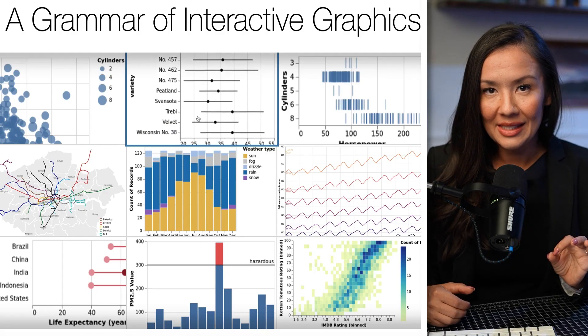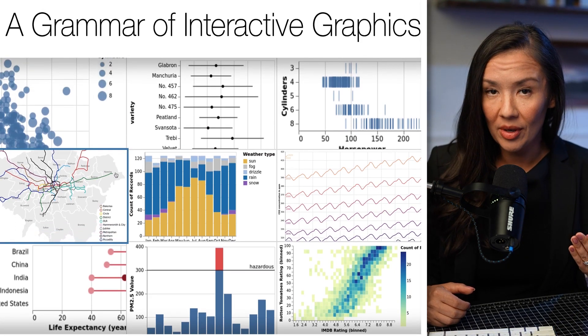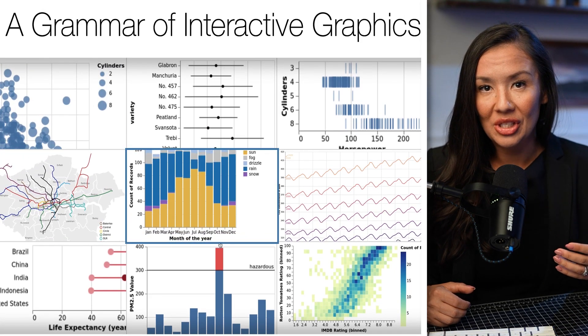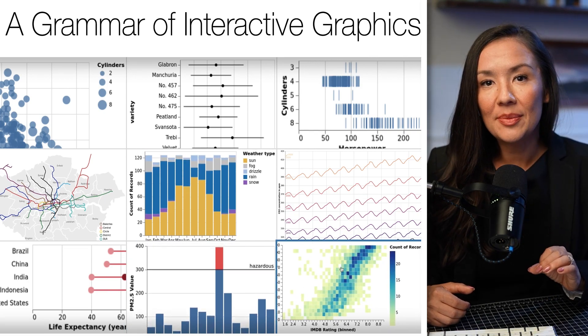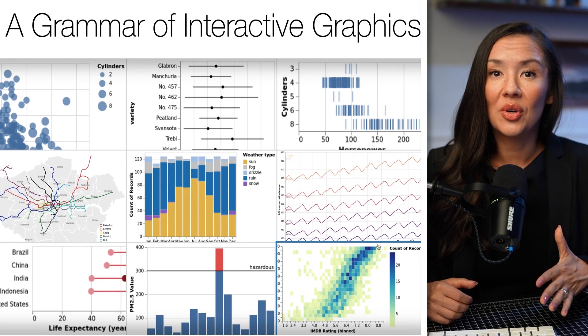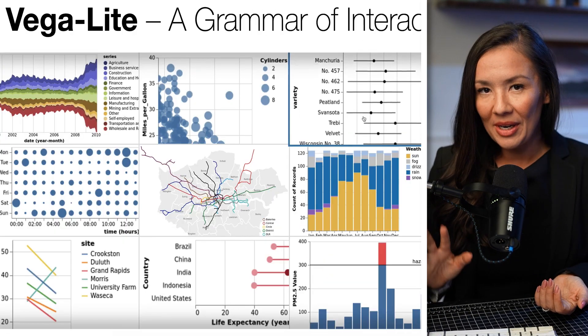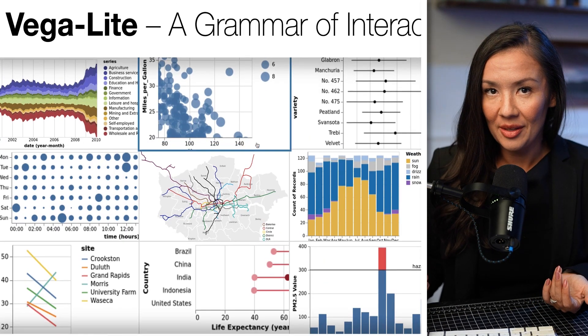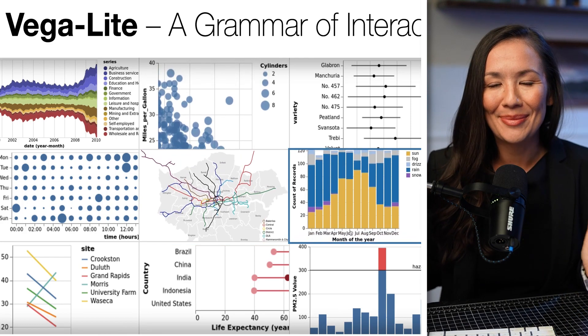Now, before we jump into the nitty-gritty of coding, let's briefly talk about what Vega-Lite and D3 are. Vega-Lite is a high-level visualization grammar that allows you to describe your visualizations using simple syntax. It is designed to make the process of creating visualizations faster and more intuitive, especially if you're dealing with common chart types like bar charts, line charts, scatter plots, and more.